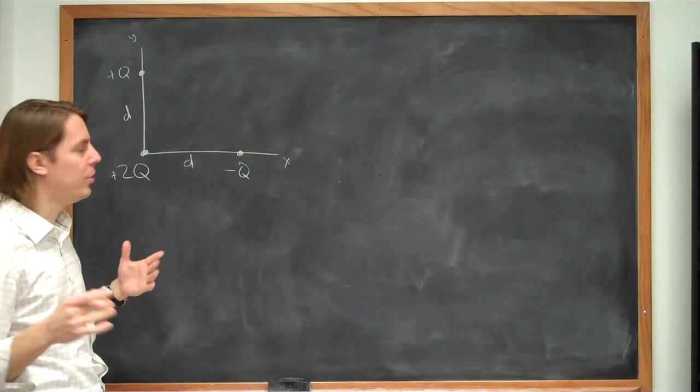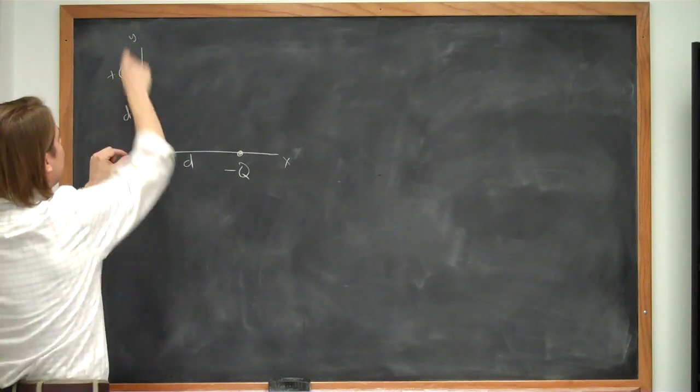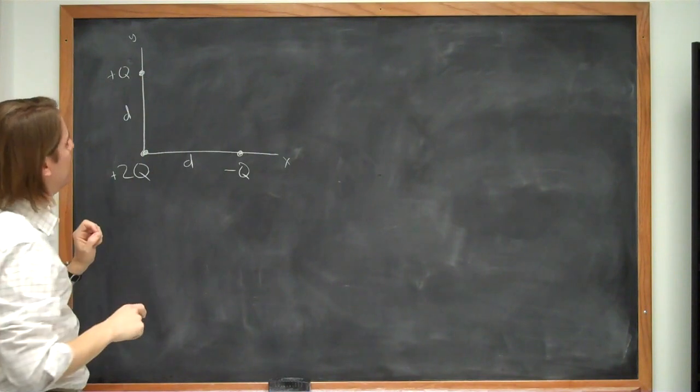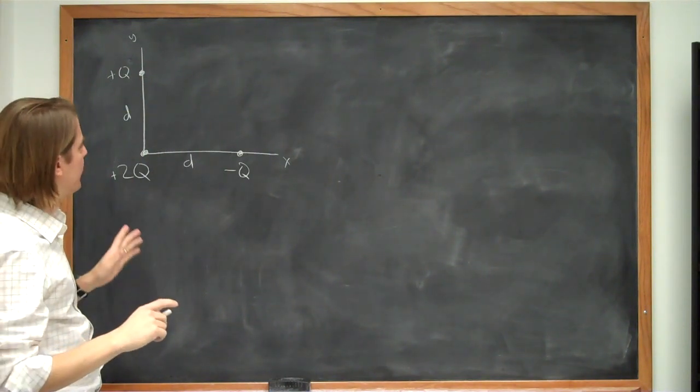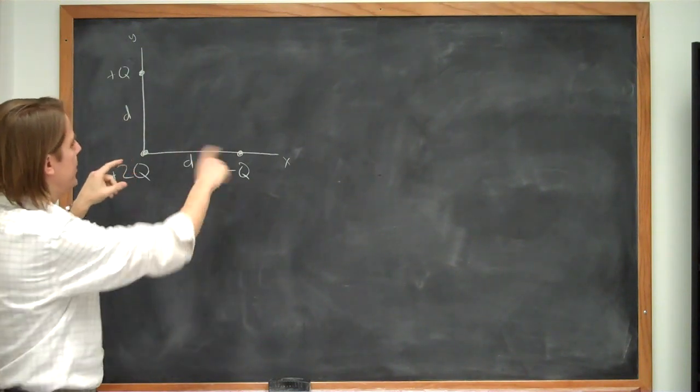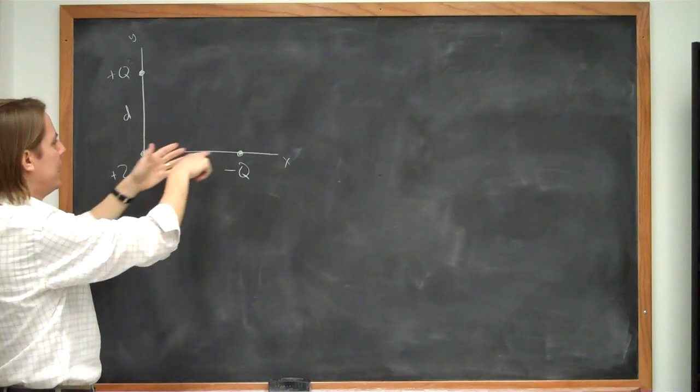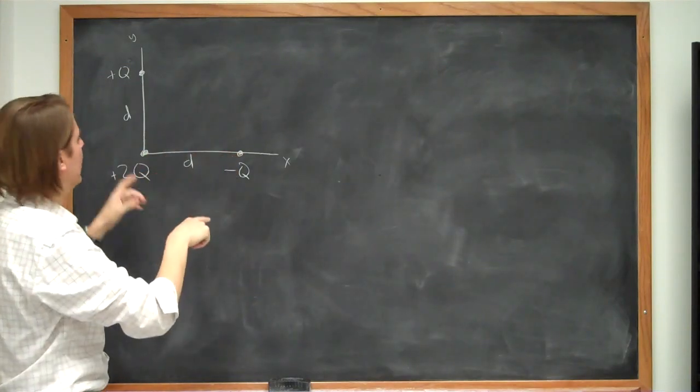So we're going to use Coulomb's Law, and since this is not a one-dimensional problem, since we're going to have forces this way and that way, that means we're going to have to do this as a vector. So let's start just by figuring out the force on q due to these two, and we know that the force is sum, so we just have to take the force due to this one and add the force due to that one.